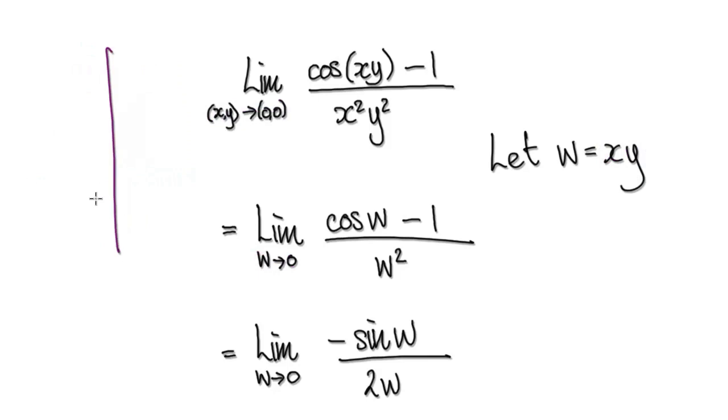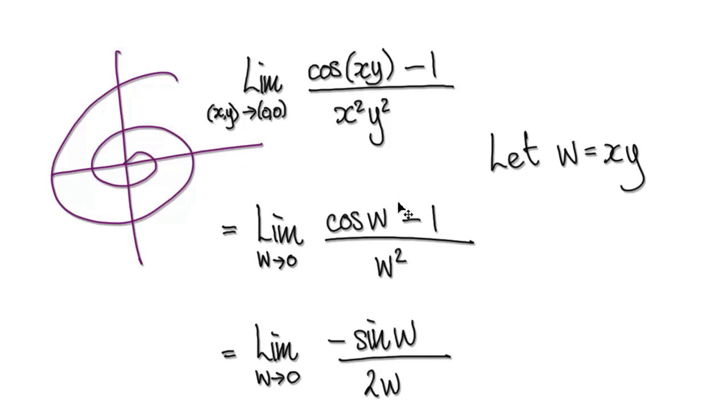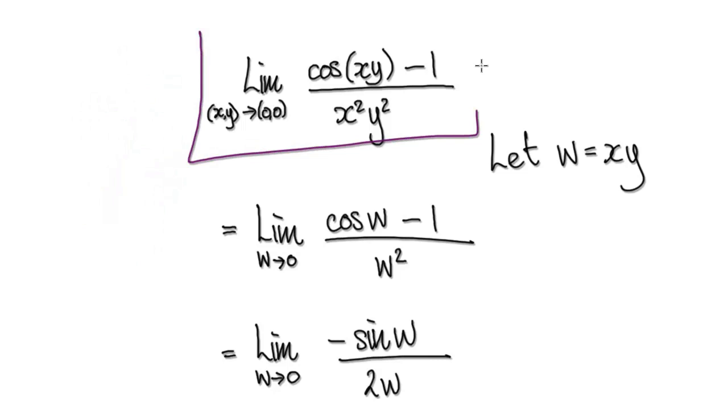Even if you approach the origin in a straight line, x times y will give you this area here. As you approach the origin, the area gets smaller and smaller. No matter how you approach the origin, x times y will get smaller and smaller. The point I'm trying to make is that finding the limit of this is the same as finding the limit of this.